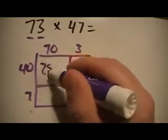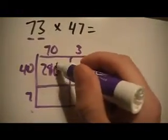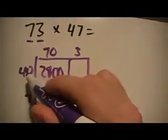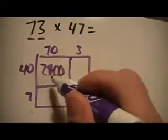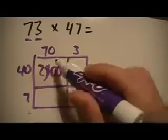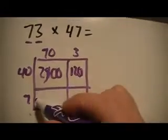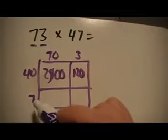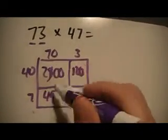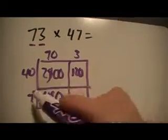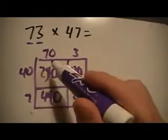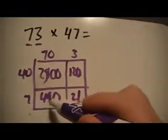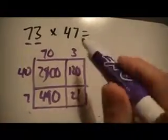We know that 4 times 7 is 28 — there are two zeros in the factors, so we add two zeros. Because this is 10 times bigger than 4 and this is 10 times bigger than 7, 70 by 40 is 100 times bigger than 7 times 4, so that's 2,800. The 40 by 3 rectangle: 4 times 3 is 12, with the zero that's 120. The 7 by 70 rectangle: 7 times 7 is 49, with the zero that's 490. And then 7 times 3 is 21. So I've got the areas: 40 by 70 is 2,800, 40 by 3 is 120, 7 by 70 is 490, and 7 by 3 is 21.